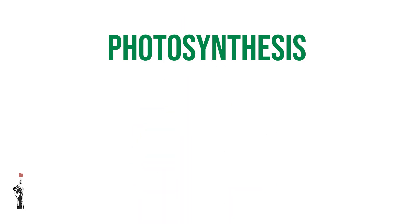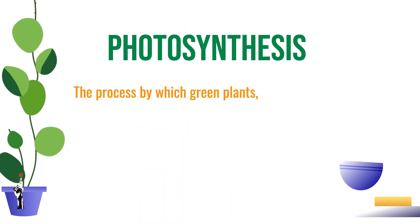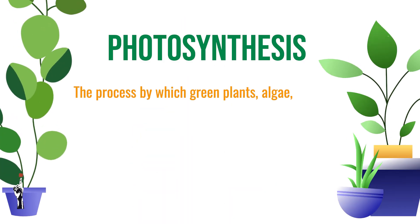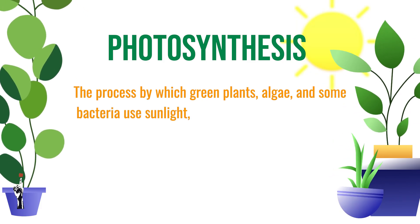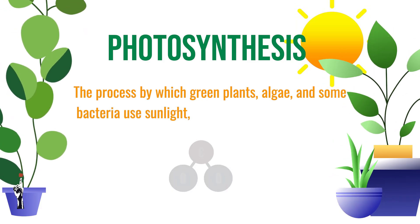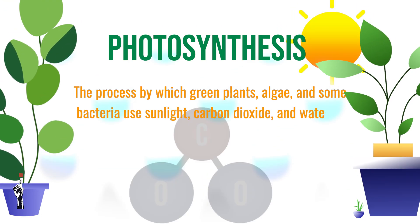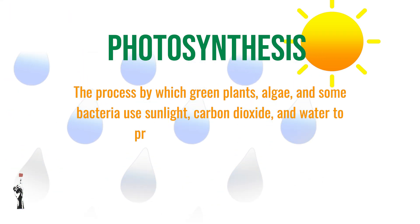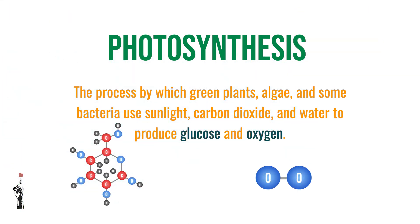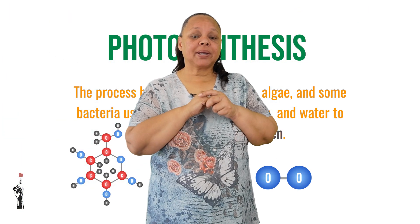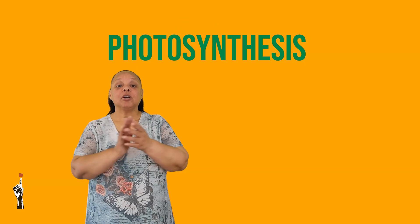Let's take a look at photosynthesis. Photosynthesis is the process by which green plants, algae, and some bacteria use sunlight, carbon dioxide, and water to produce glucose and oxygen. Let's break it down step by step.